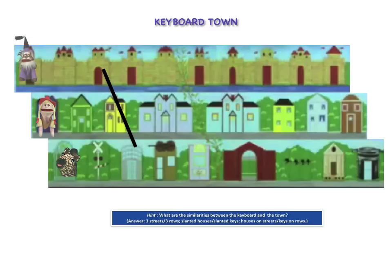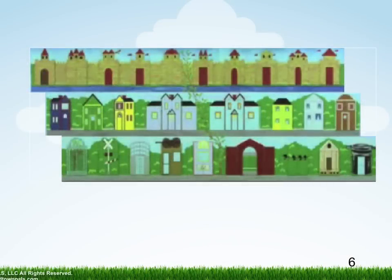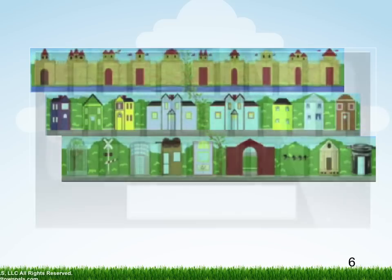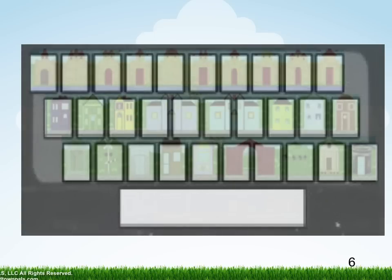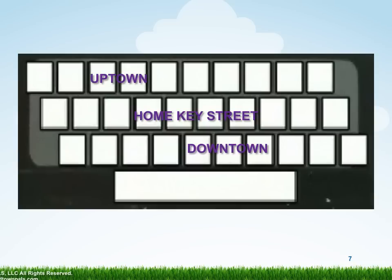Do you notice that the houses are on a slant? Watch now as the town becomes a keyboard. Wow! The keys are on a slant too. The keyboard has three rows and there are keys on each row. The middle row is called Home Key Street. The row below is called Downtown, and the row above is Uptown.